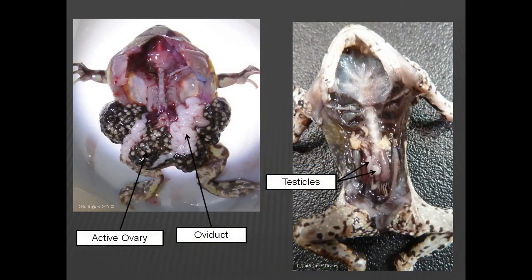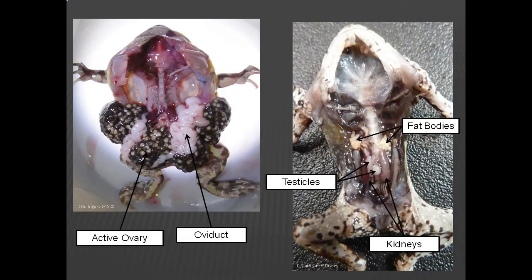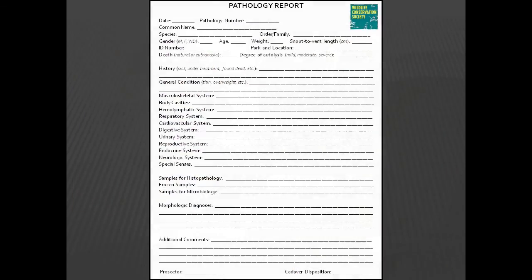As a comparison, the image on the left shows a female toad during a reproductively active period with highly developed ovaries and oviducts. In contrast, in the image on the right, the testicles of a male toad are visible, and their anatomical relationship to celomic fat bodies and the kidneys is seen. At this point, the actual necropsy procedure has been completed. The species and biometric data and any necropsy findings should be recorded in a standardized form as soon as the necropsy is finished. Having a standard form will help maintain a systematic approach and prevent missing any observations during the necropsy.